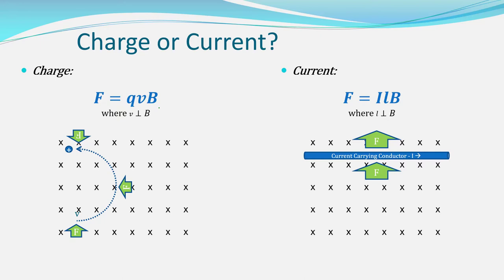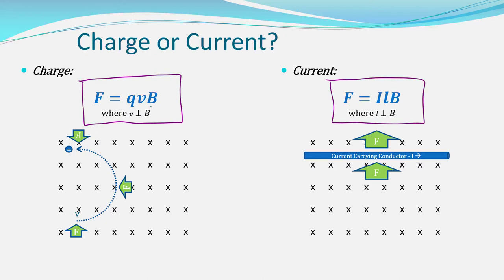Now that you're getting the direction sorted, let's look at quantifying how much force there is due to a charge or current running through a magnetic field. We have two equations, and notice they both say the force is equal to something related to the magnetic flux density B. For a charge it depends on Q and V, and for a current it depends on current and the length of the wire.